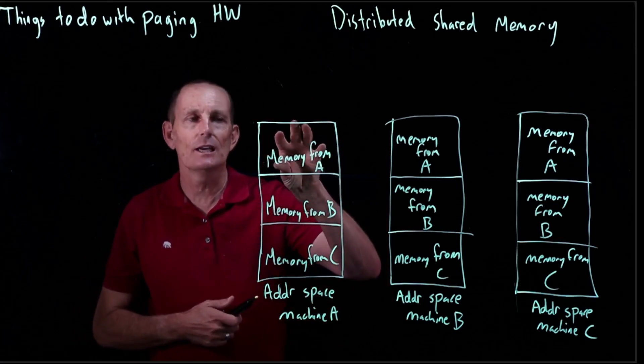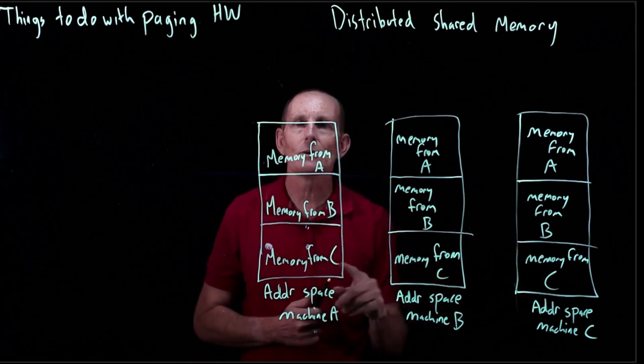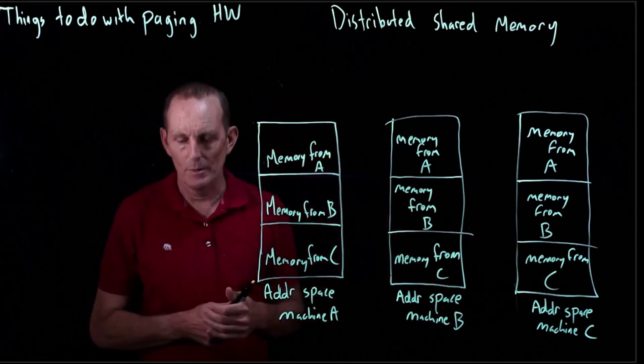This is the amount that's stored on machine A. This is stored on machine B and this is stored on machine C, and yet we still have this shared view of the memory.